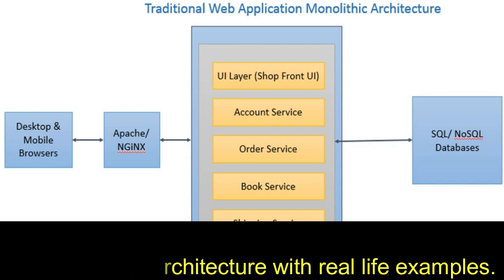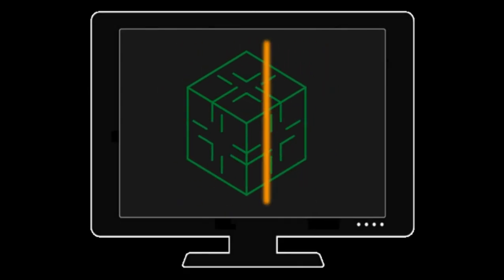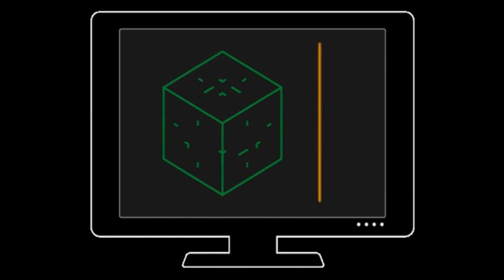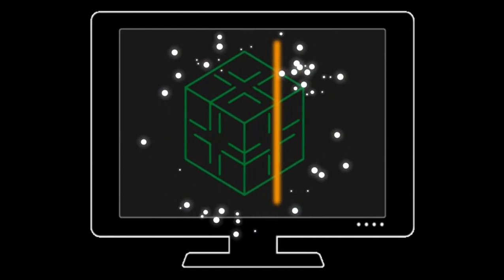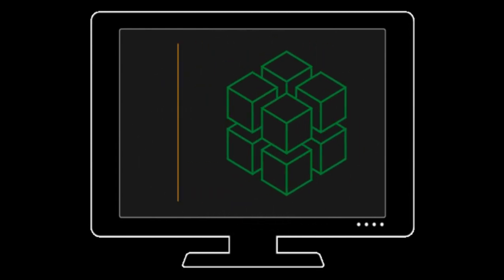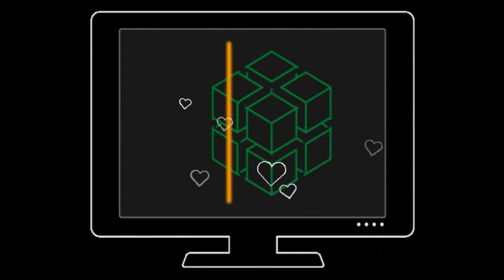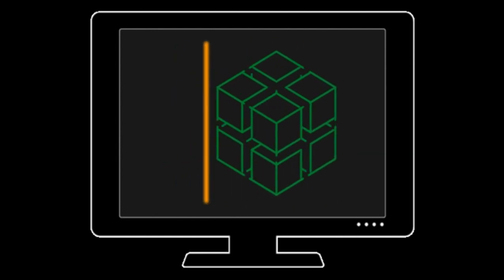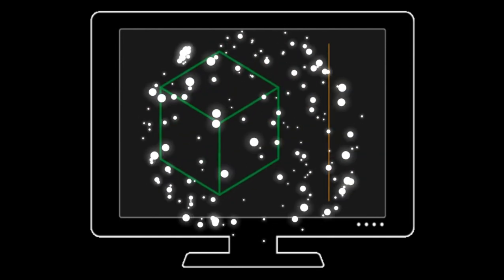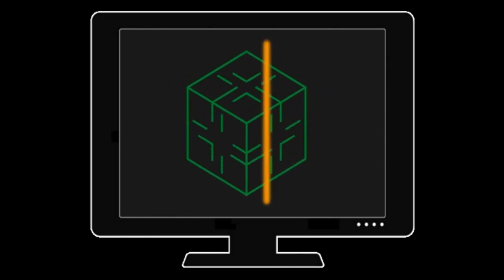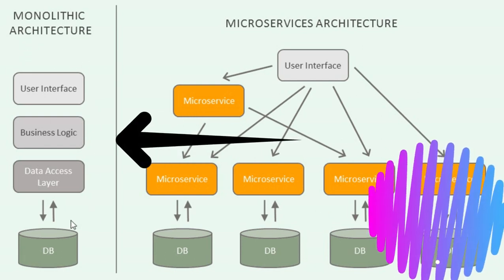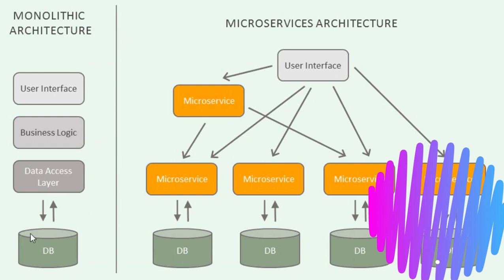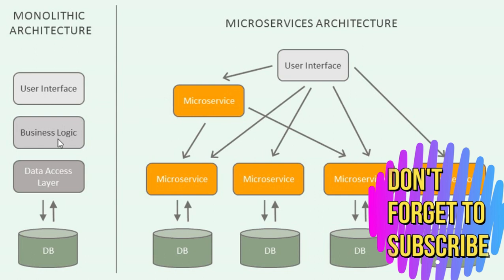What approach should we follow to overcome these drawbacks? Don't worry, we have an option. On your screen you can see that a single application is divided into multiple sub-applications or modules. This is possible by the help of the concept of microservices. Our monolithic architecture, which was a single entity with a single database, can be divided into multiple services.